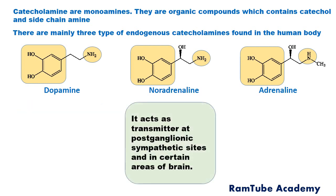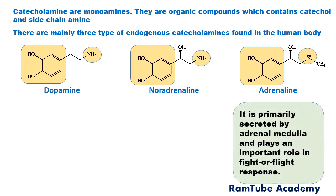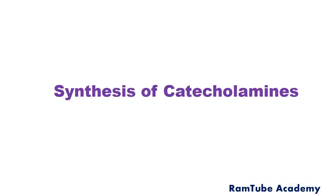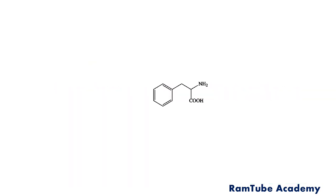The second catecholamine is noradrenaline, also known as norepinephrine. It is synthesized in adrenergic neurons and acts as a transmitter at postganglionic sympathetic sites and in certain areas of the brain. The last catecholamine is adrenaline, also known as epinephrine. It is primarily secreted by the adrenal medulla gland situated on the kidneys and plays an important role in the fight-or-flight response. Now let's discuss the synthesis of catecholamines.